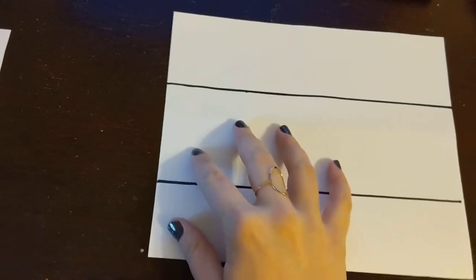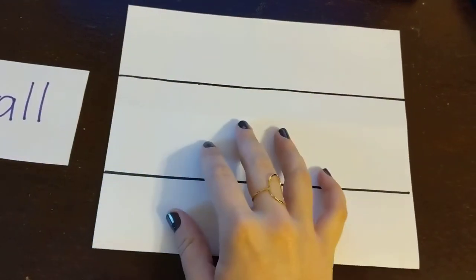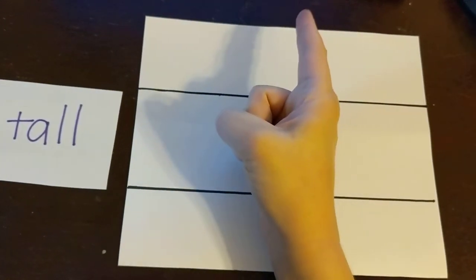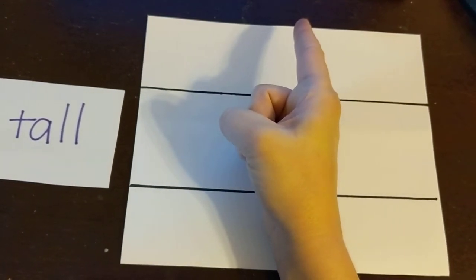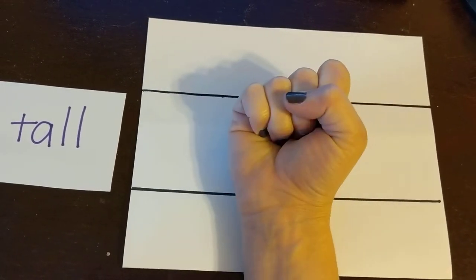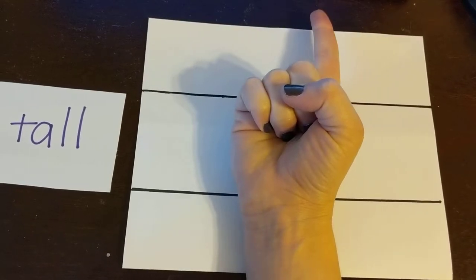Next, there are tall letters. Tall letters come up above the lines. Whereas short letters sit in between, tall letters have a piece that stands tall.